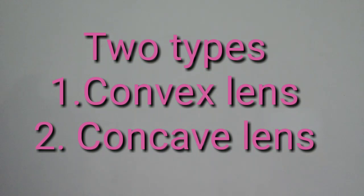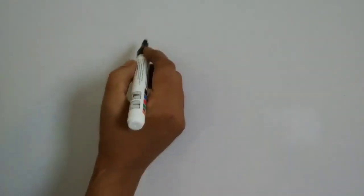Mainly there are convex lenses and concave lenses. In addition to that, we get plano-concave, plano-convex, and concave-convex lenses — that is, mixed with plane and concave, or plane and convex. Like that you will get many types of lenses. But the main two lenses we are discussing here are convex lens and concave lens.